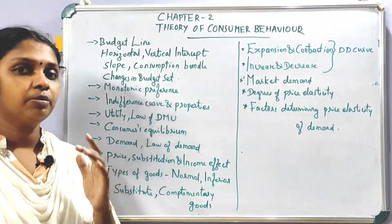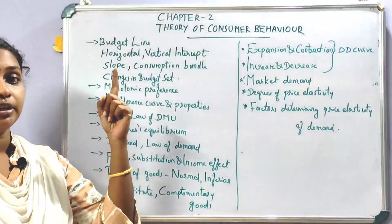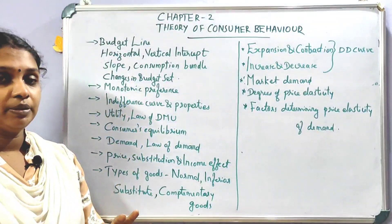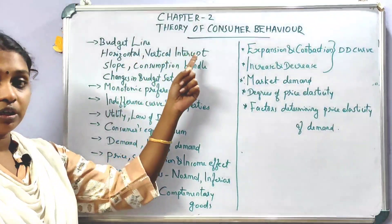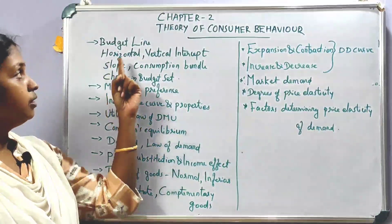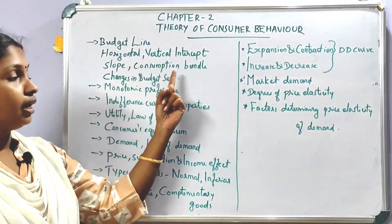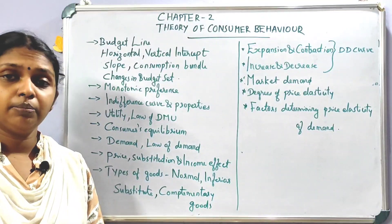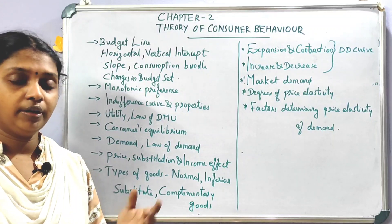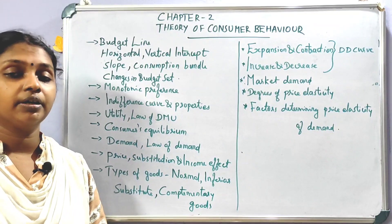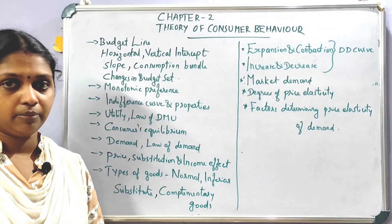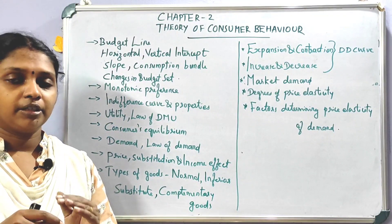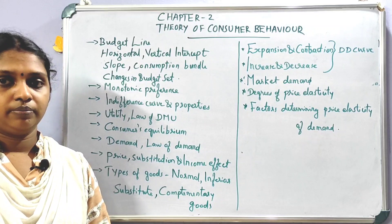If you study the budget line, you will find the equation for the budget line. Then there is the diagrammatic presentation — you can use horizontal intercept, vertical intercept, budget line slope, consumption bundle, and changes in budget set. If you study these things, you can score a maximum of 8 marks on the essay question.